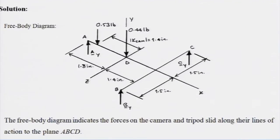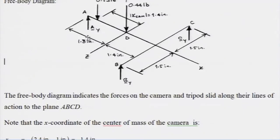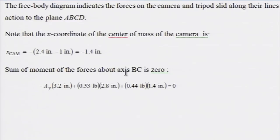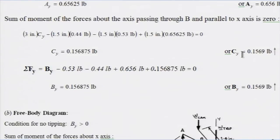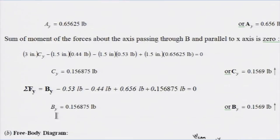For the next step: take the moment about BC to solve for AY, then choose an axis through B parallel to the X-axis — axis BX — and take the moment to solve for CY. BY equals CY, so they get the same value. Alternatively, use the sum of forces along Y equals 0, noting BY equals CY by symmetry about the X-axis.